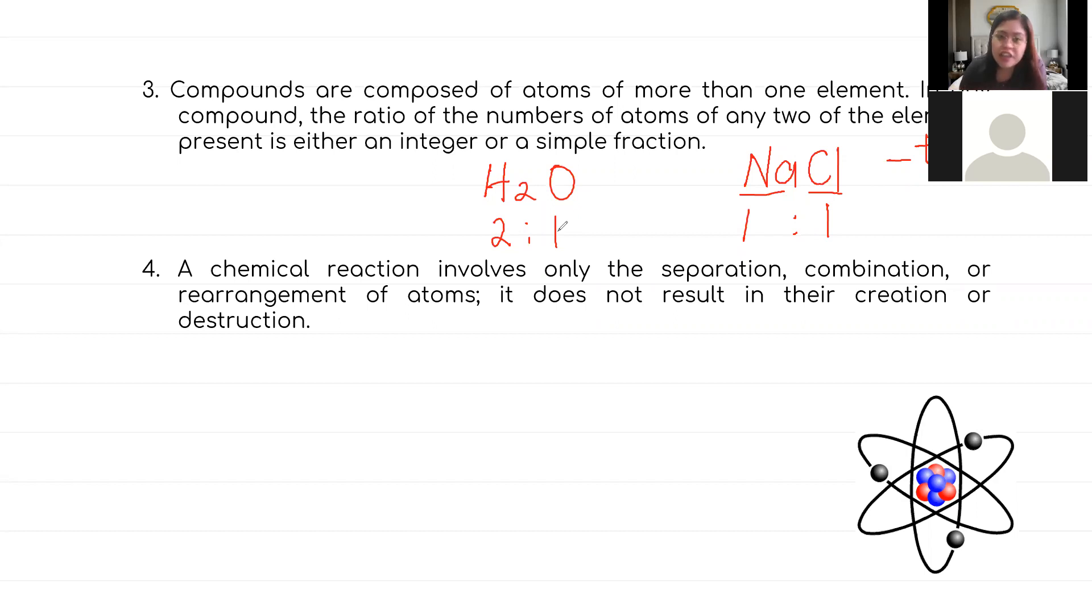Next, a chemical reaction involves only the separation, combination, or rearrangement of atoms. It does not result in their creation or destruction. If we have chemical reactions, it involves separation—like salt, sodium can separate from chloride—or the other way around, sodium plus chloride will give you NaCl. That's separation and combination or rearrangement of atoms.